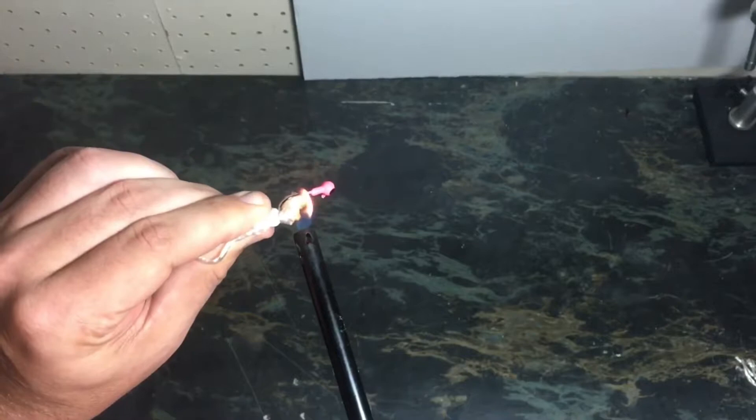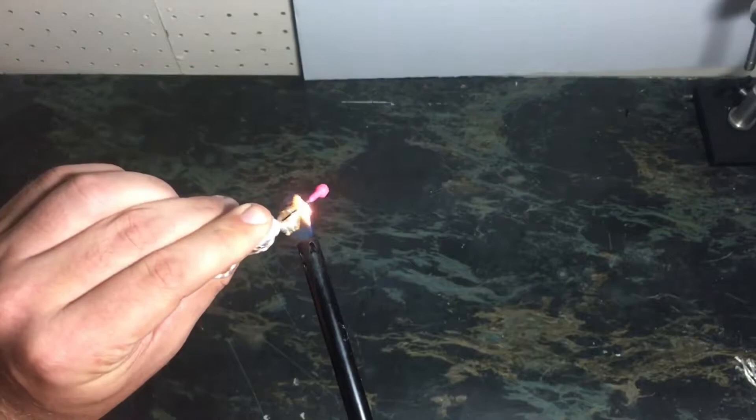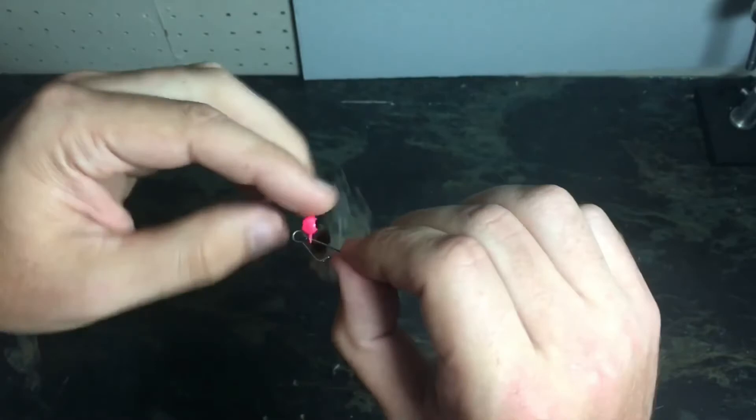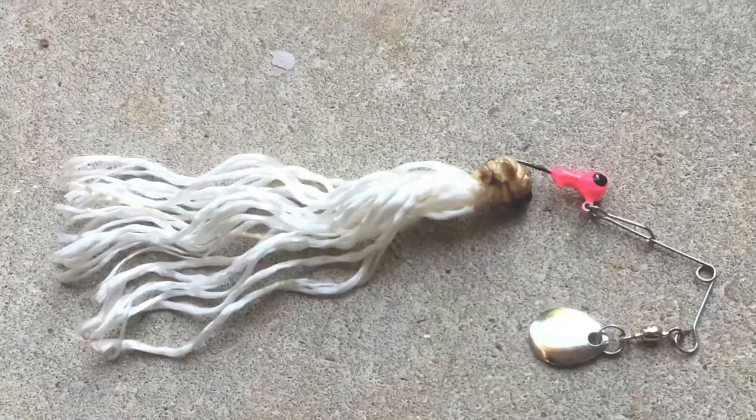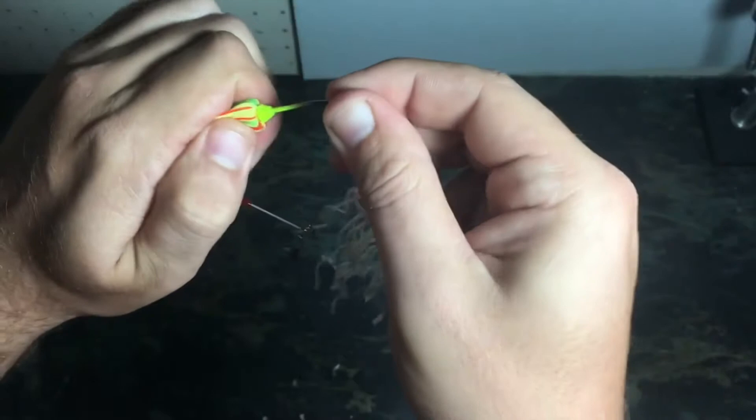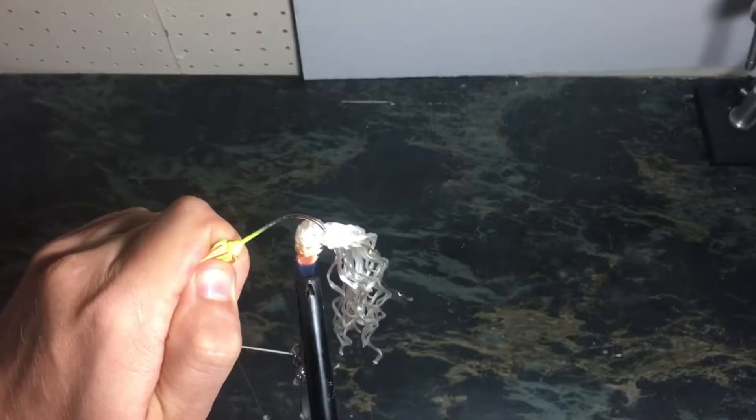The nice thing about using these weighted jig head rope lures is how quickly they sink in the water column. If the gar are down in the water column, this weighted jig head should sink down to their level rather effectively. Another nice thing about using a jig head is how you can add a spinner to your lure for extra flash. With the spinnerbait, you can either take the skirt off or leave it on. If you leave it on, be sure to hold it back as you're melting your nylon.